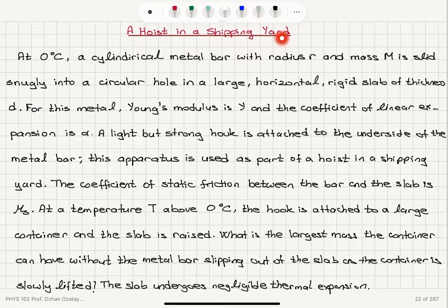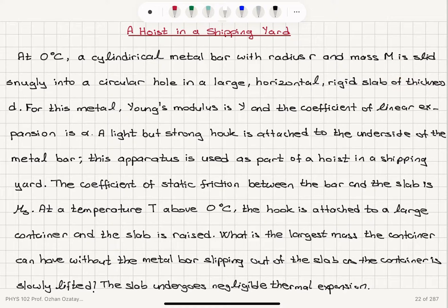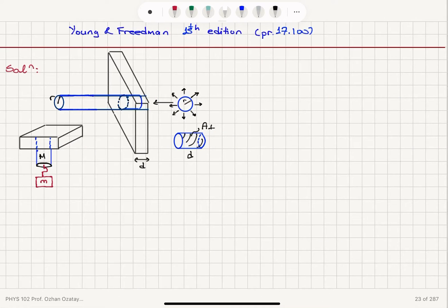A hoist in a shipping yard. At 0 degrees Celsius, a cylindrical metal bar with radius R and mass capital M is slid snugly into a circular hole in a large horizontal rigid slab of thickness D. So we have a cylindrical bar that is slid into a slab of thickness D. This bar has radius R and it has mass capital M.